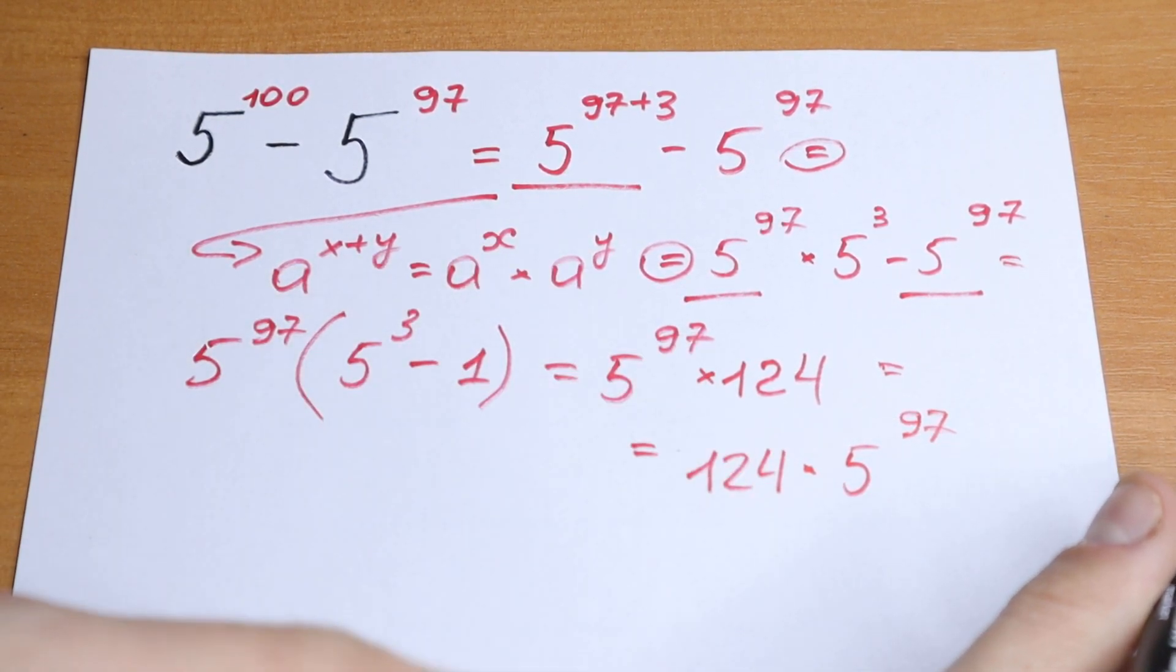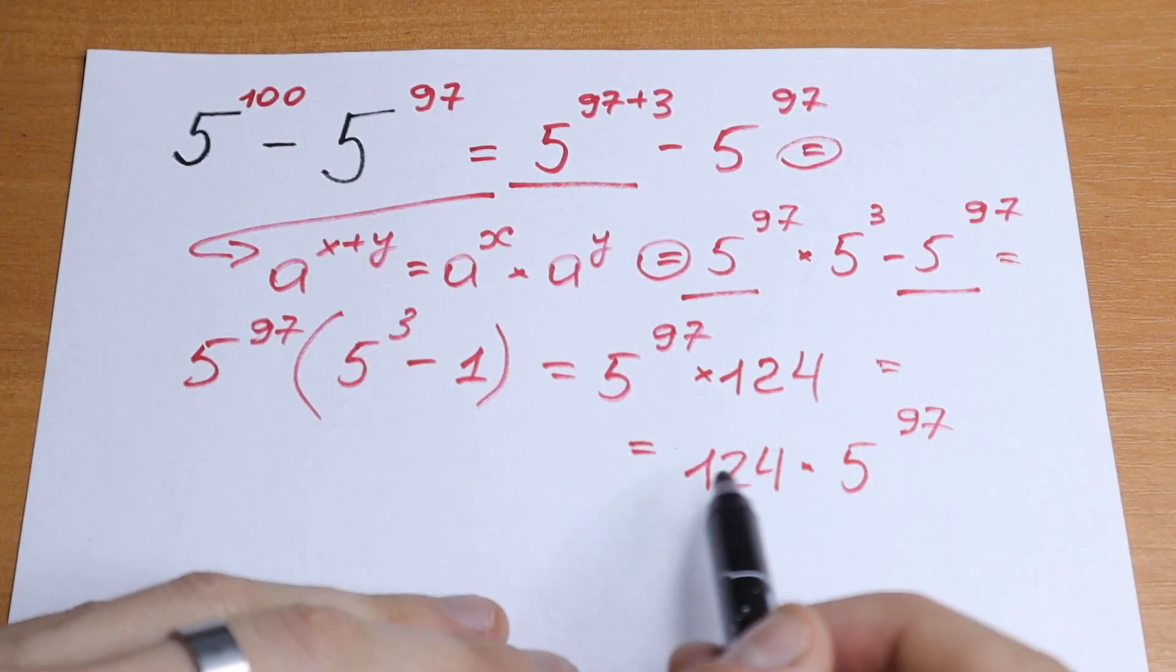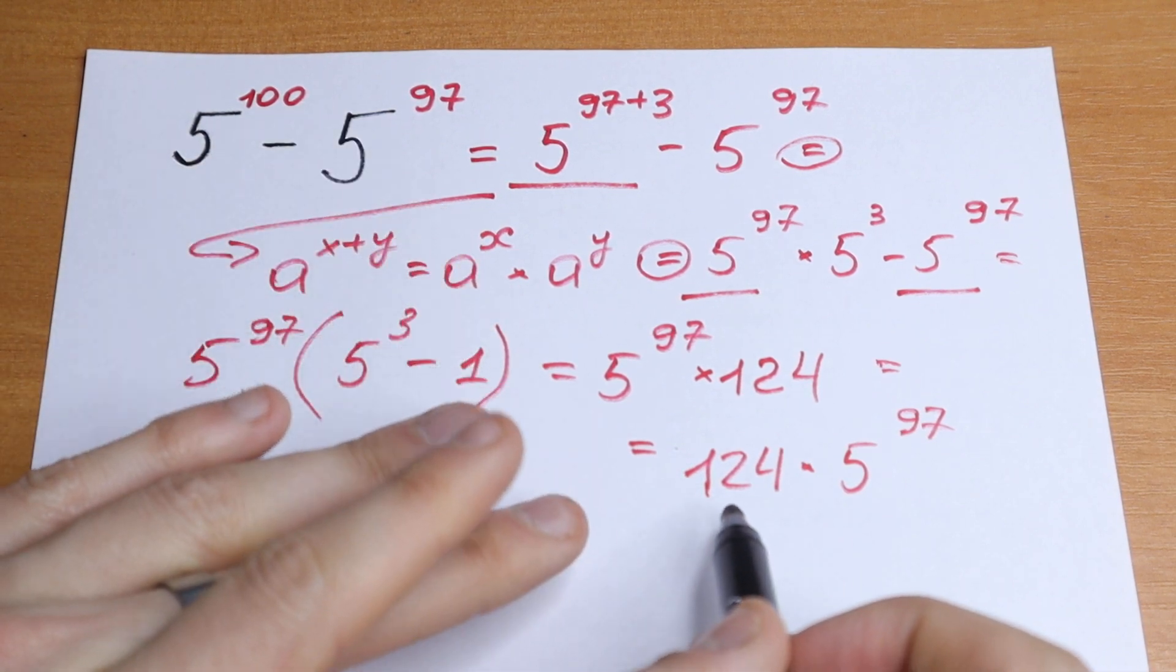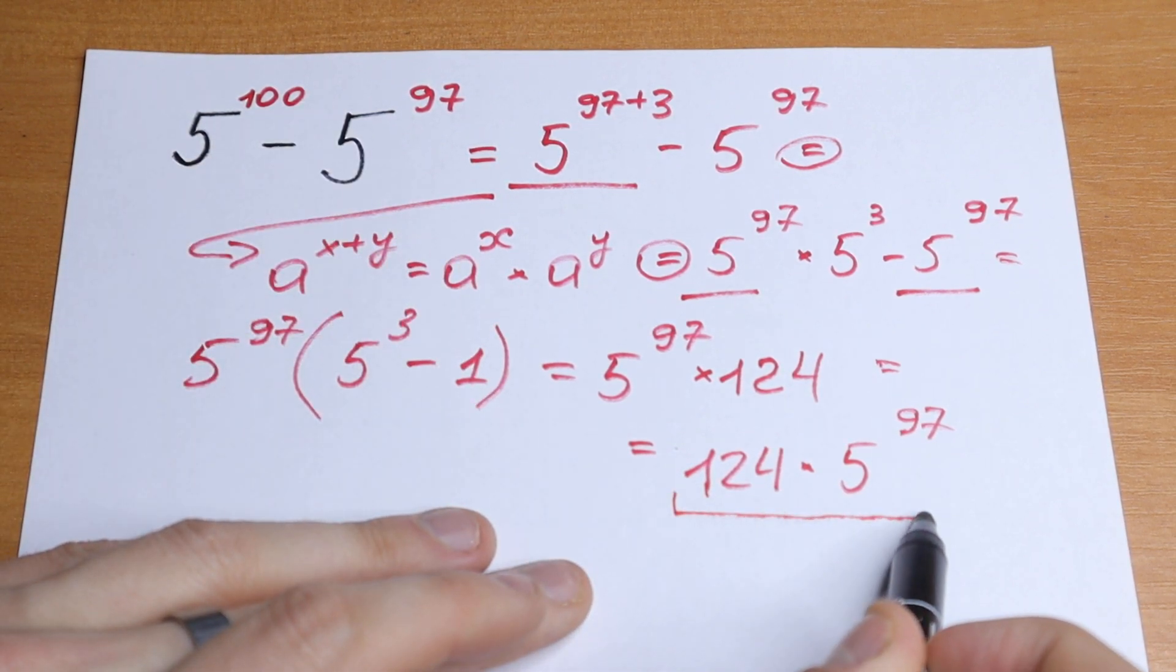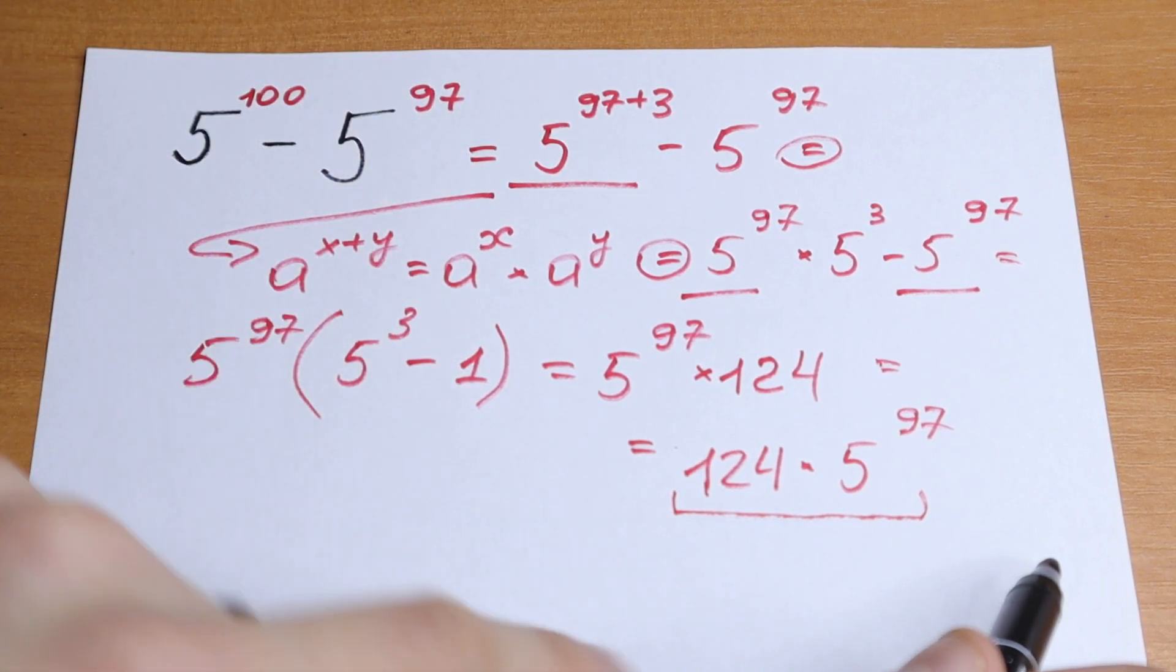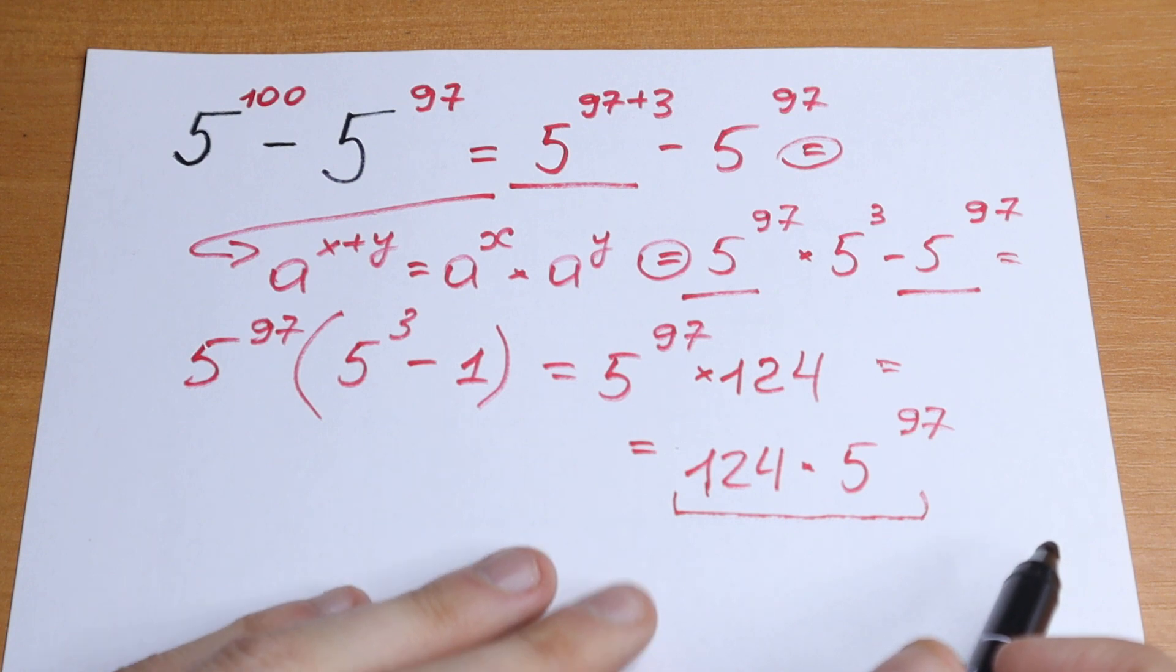Of course we cannot simplify this more because it's really hard. We need to raise it to find this value. But step by step we simplified this, and this will be our answer. Take a look: we started with 2 numbers with huge powers, and now we have only 1 number with a huge power. So this is a simplifying way.